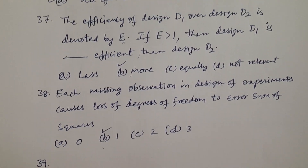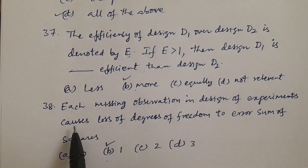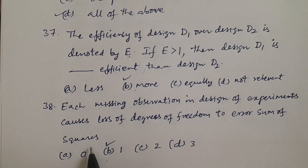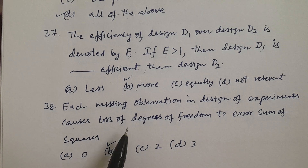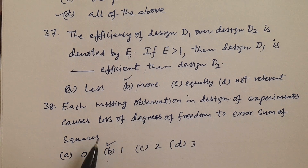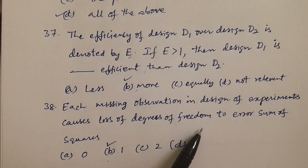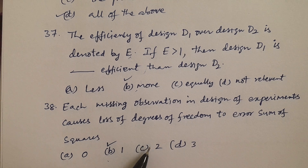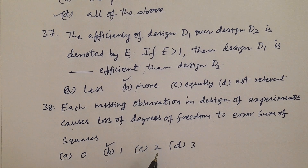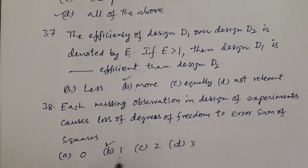Question number 38: Each missing observation in the design of experiments causes loss of degrees of freedom to the error sum of squares. If one observation is missed, how many degrees of freedom are lost? Options: A: zero, B: one, C: two, D: three. The answer is one.